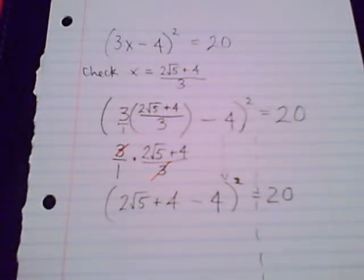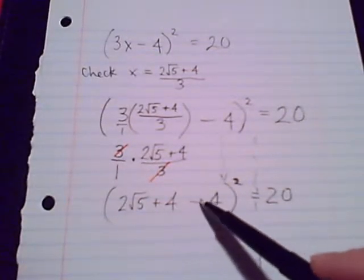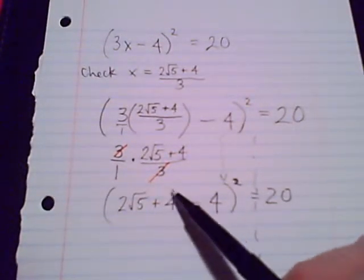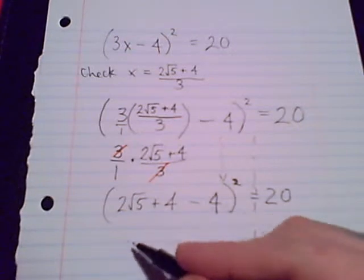Still working inside the parentheses. 2√5. There's a plus 4. There's a minus 4. Those are like terms, both just integers. Plus 4, minus 4. No radical parts. And those added together equals 0. They're canceling each other out.